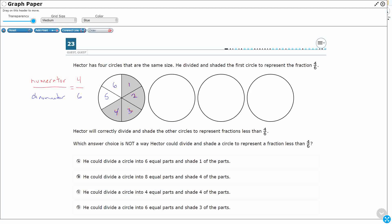Now, Hector will correctly divide and shade the other circles to represent fractions less than 4/6. So which answer choice is not a way that he could divide and shade a circle to represent a fraction. So three of these are going to work. I'm looking for the one that doesn't work. And thankfully, they gave us three circles, so we can just draw right on it.